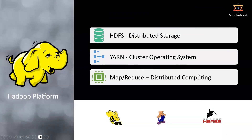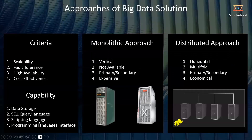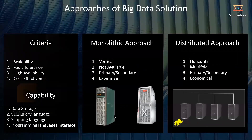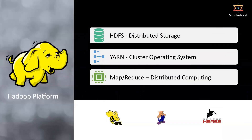The third thing Hadoop brought was MapReduce, which is a programming framework — a distributed computing and distributed data processing framework — to help you do data processing. Data warehouses were offering SQL, scripting, and programming language interfaces. Hadoop initially offered MapReduce, which was done in the Java programming language.